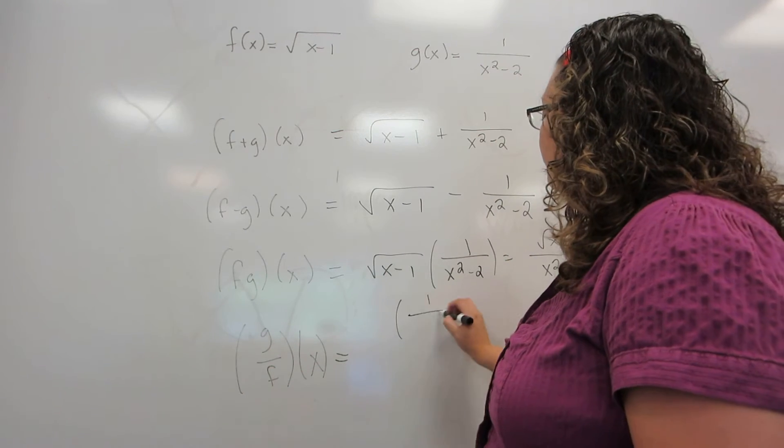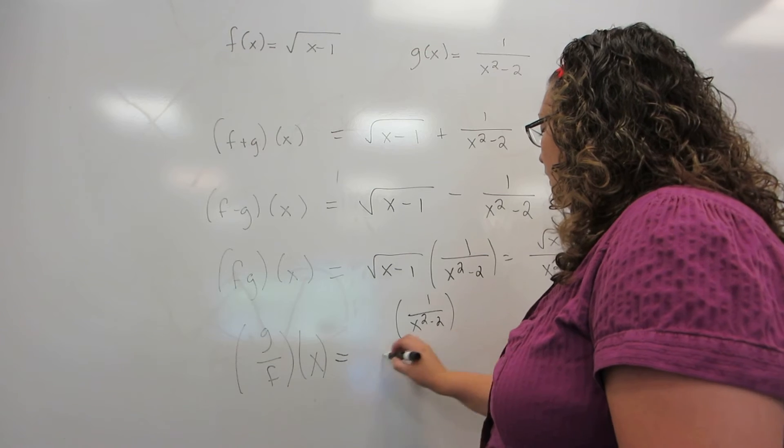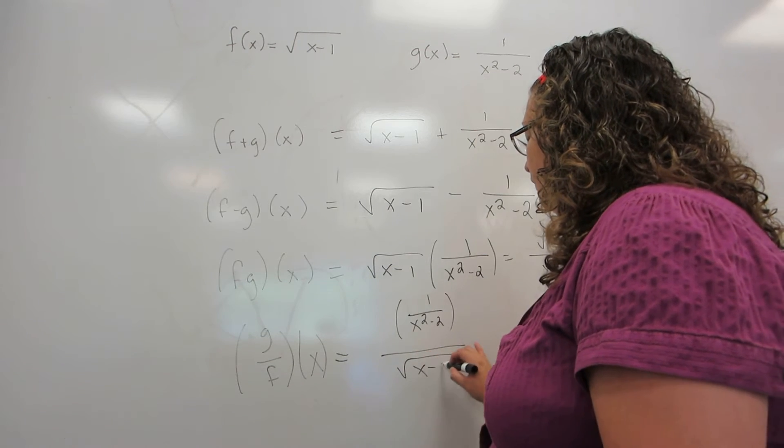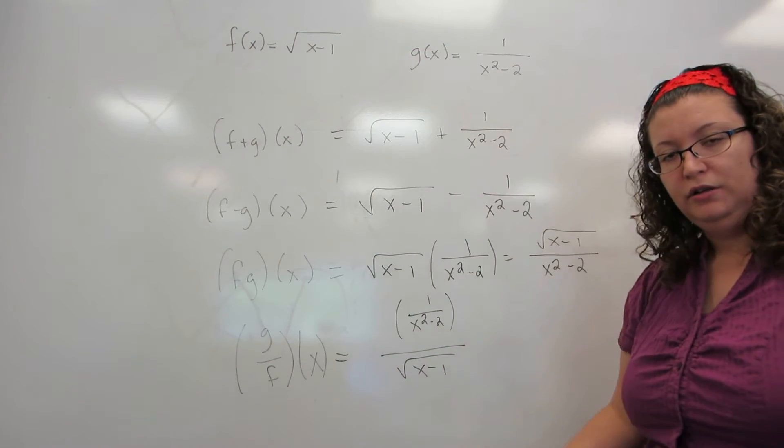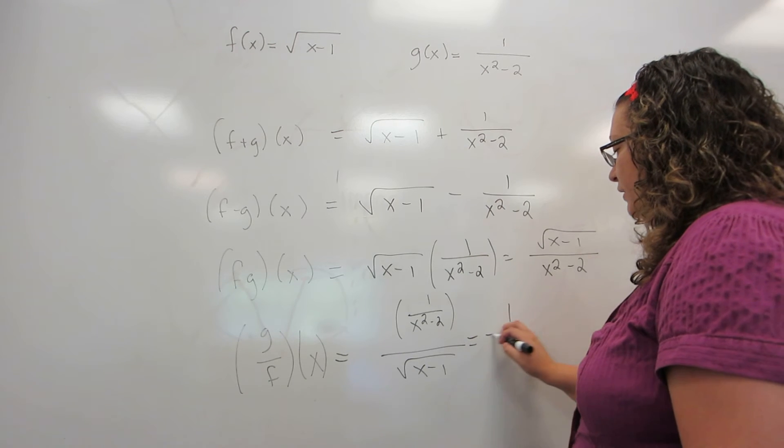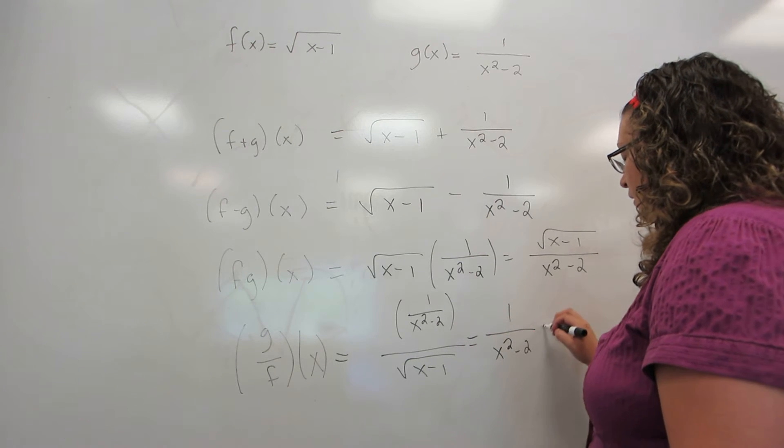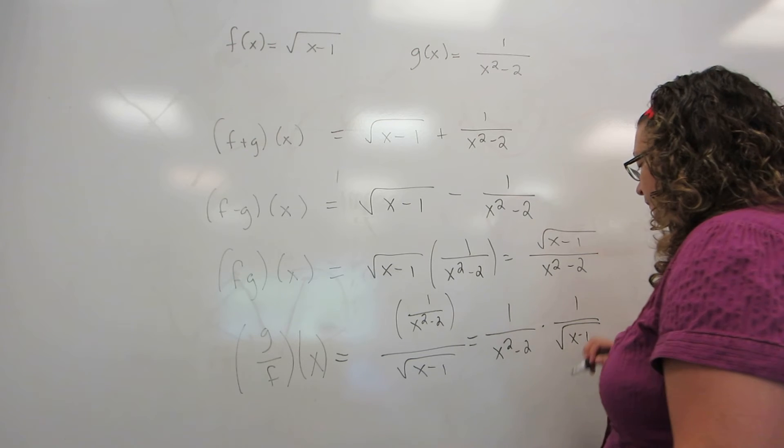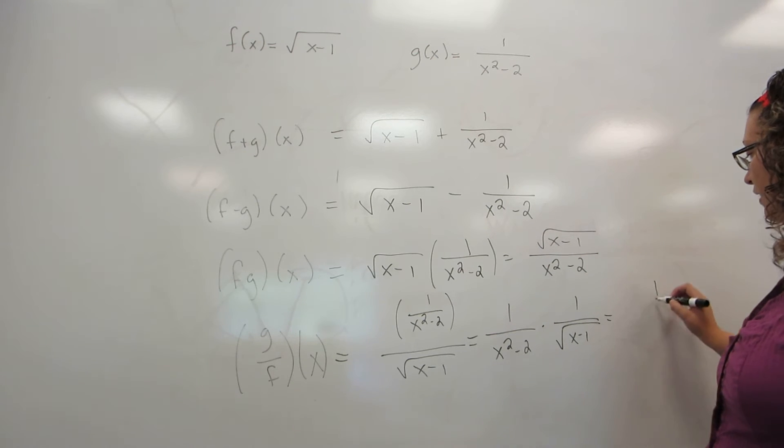I'm going to take g and divide it by f. Now that's messy looking, so we're going to use the fact that division is the same as multiplying by a reciprocal, so that we can rewrite this in a little bit of a prettier form.